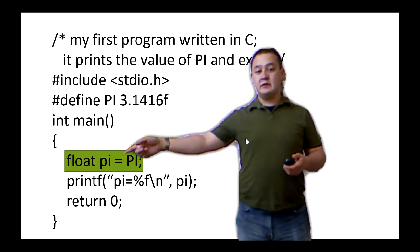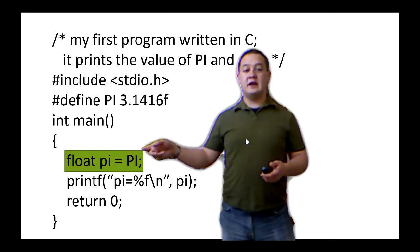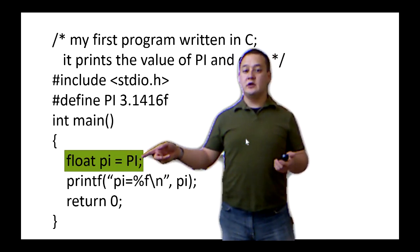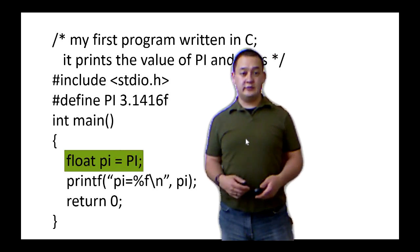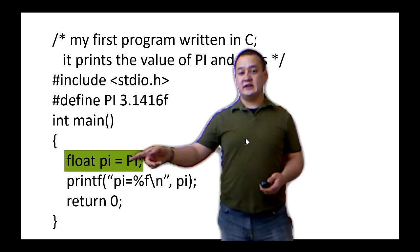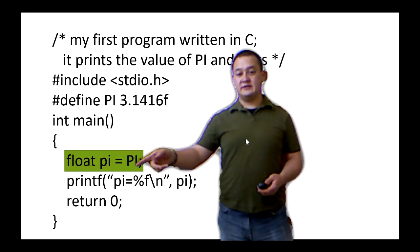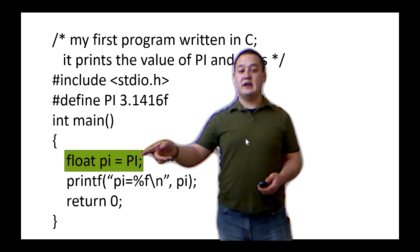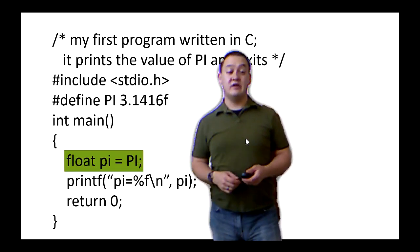And then we've got the name of the variable, which is this lowercase pi. And then if we want to, this is optional, we can assign a value to our variable immediately by putting this assignment operator equals and saying, then we'll put this 3.1416f as the value of the variable pi.